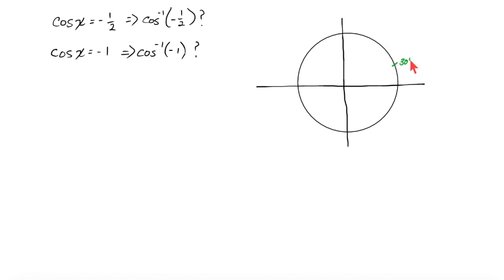What I usually say is we got to know about one quarter of this thing. I have to know about what goes on at 30 degrees, which is pi over 6 radians, and how 30 degrees leads me to the point root 3 over 2, 1 half on the unit circle.